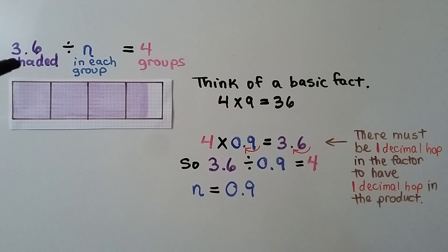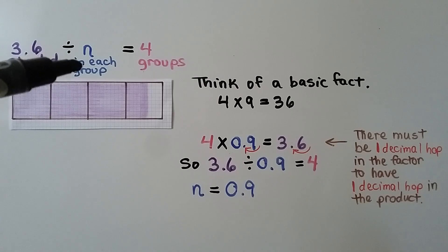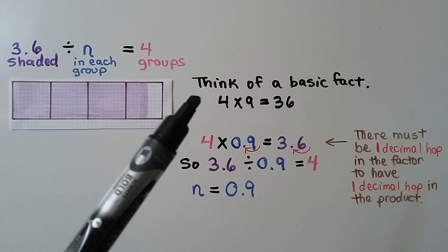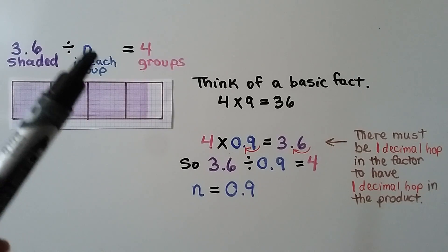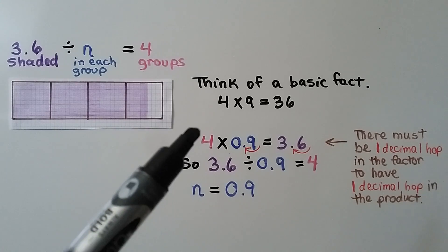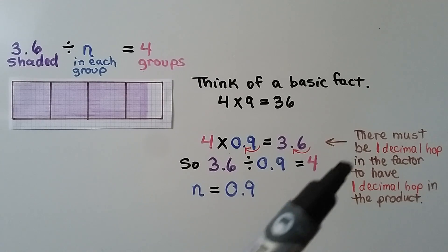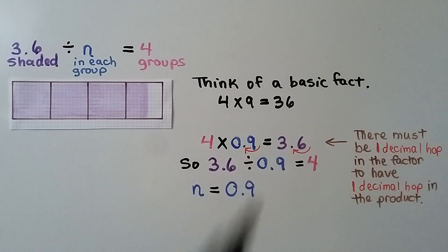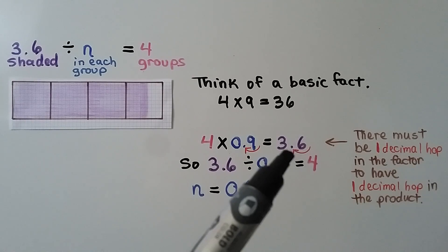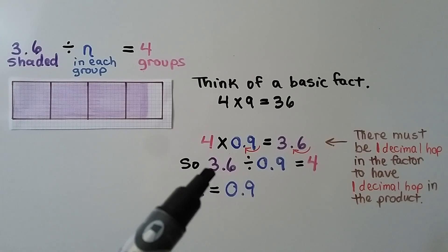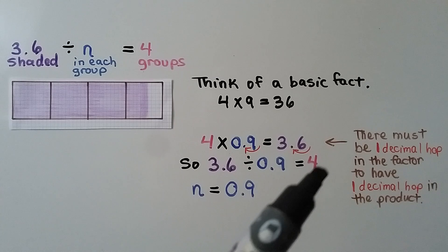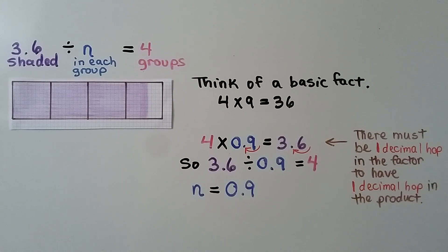Here we have 3 and 6 tenths divided by some number n, where n is how many are in each group, and we're told there are 4 groups. We can solve this by thinking of a basic fact: 4 times 9 equals 36, so 4 times 9 tenths equals 3 and 6 tenths. There must be 1 decimal hop in the factor to have 1 decimal hop in the product, so n must be 9 tenths. Therefore, 3 and 6 tenths divided by 9 tenths equals 4.